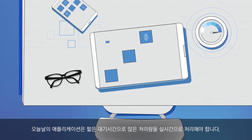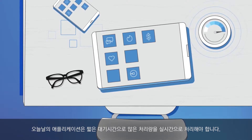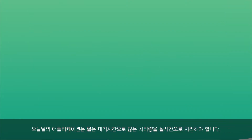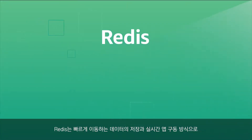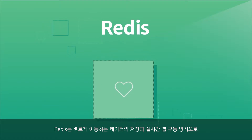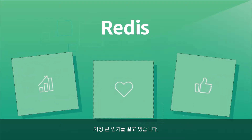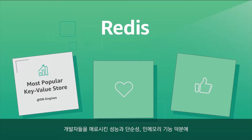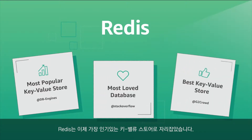Applications today need low latency and high throughput performance for real-time processing. Redis has emerged as a popular choice to store fast-moving data and power real-time apps. Developers love the performance, simplicity, and in-memory capabilities of Redis, making it the most popular key-value store.